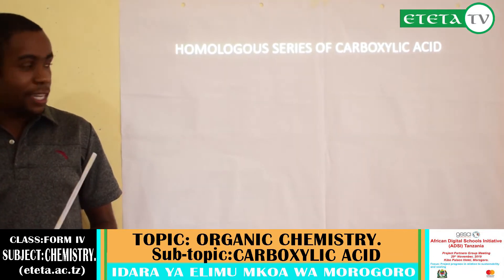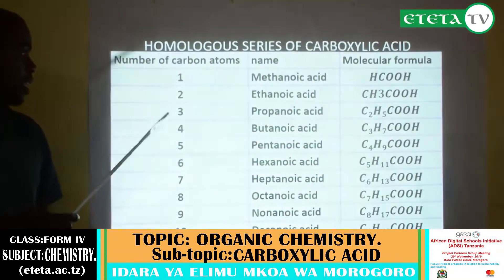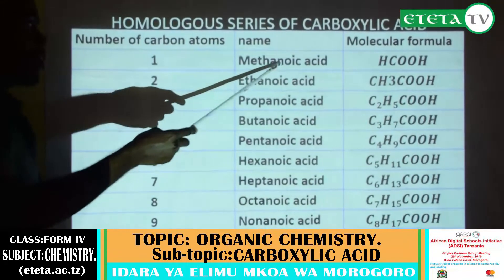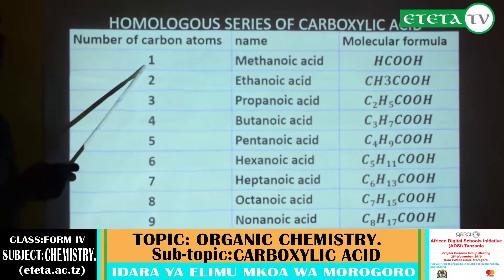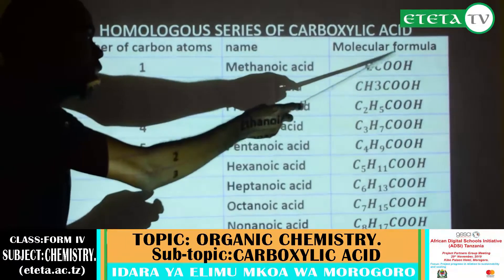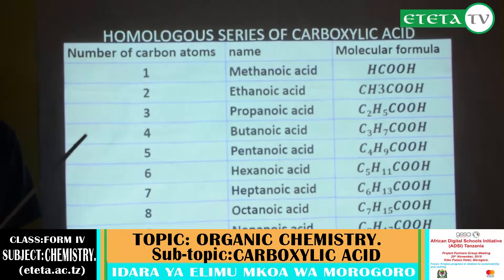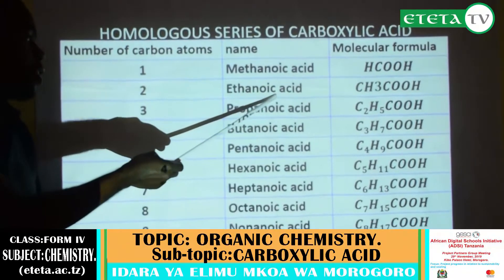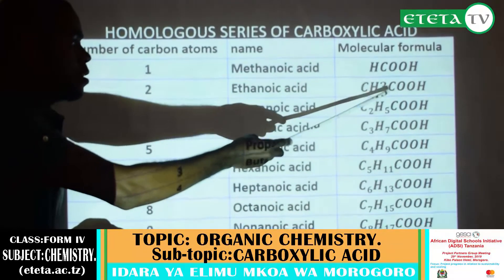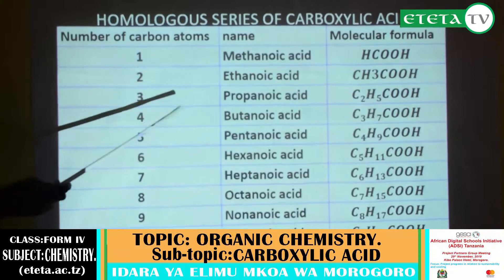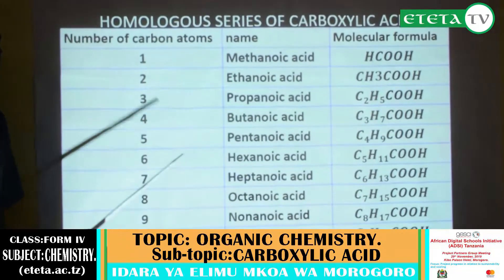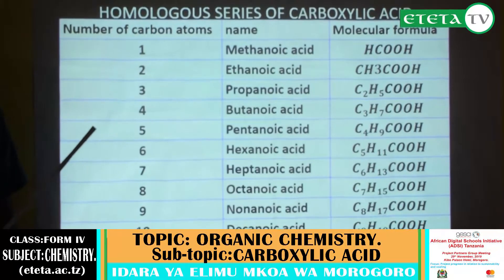Homologous series of carboxylic acid. As you see in the table, the first member is methanoic acid, with 1 carbon atom and molecular formula HCOOH. The second member is ethanoic acid, with 2 carbon atoms and molecular formula CH3COOH. The third is propanoic acid, with 3 carbon atoms and molecular formula C2H5COOH.